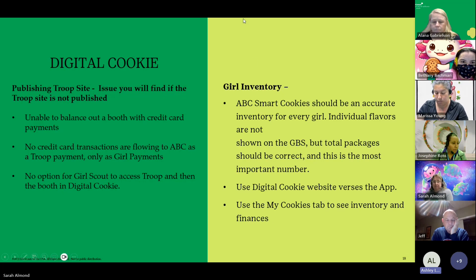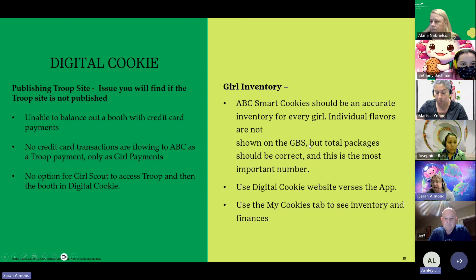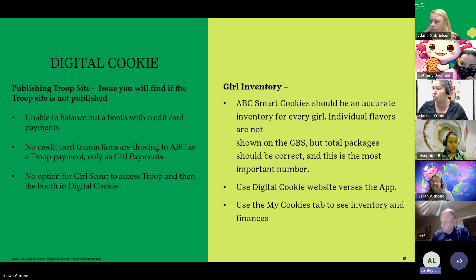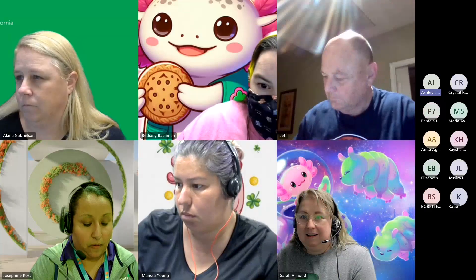Also, girl inventory in ABC Smart Cookies should be accurate for every girl. Individual flavors are not shown on the GPS, but the girl balance summary total packages should be correct, and this is the most important number. You'll want to use the Digital Cookie website versus the app for a lot of things — we'll walk you through that — and use the My Cookies tab to see inventory and finances. I'm going to log in, share my screen, and walk you through some of this.